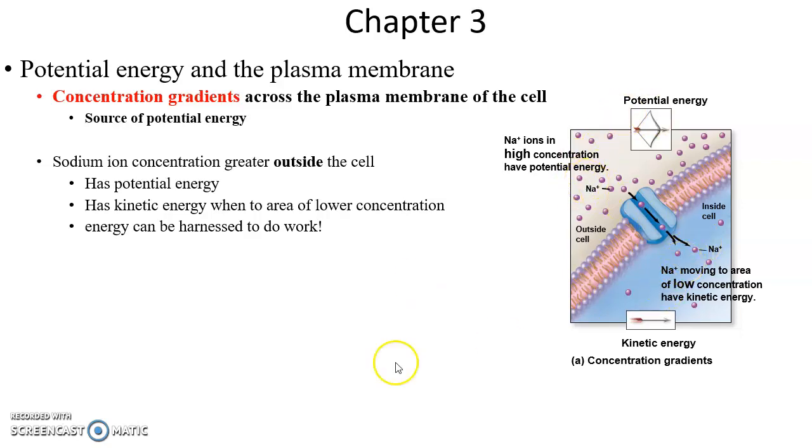For example, sodium ions high on one side, on the outside, low on the inside—that is potential energy. Then when you have certain protein structures that form a channel that allows sodium to cross the membrane going from high to low, that is turning that potential energy from that gradient into kinetic energy. The movement of the sodium ions into the cell can be used to do work of one kind or another.